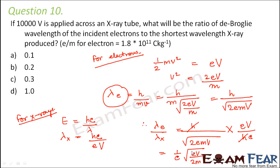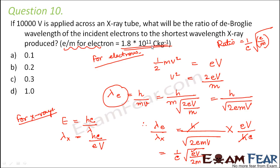Now let us put in the values. e = 1.6 × 10⁻¹⁹, V is given as 10,000 volts. Instead of putting e and m separately, e/m is given as 1.8 × 10¹¹. So the ratio equals (1/c) × √(e/m × V/2), which is (1 / 3×10⁸) × √(1.8×10¹¹ × 10,000 / 2). The final answer comes out to be 0.1, that is option A.